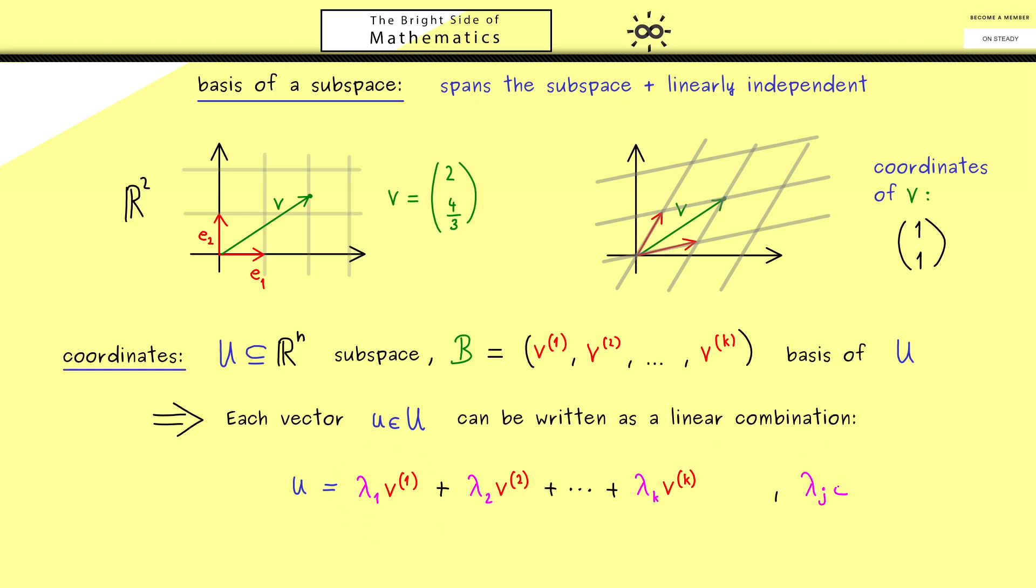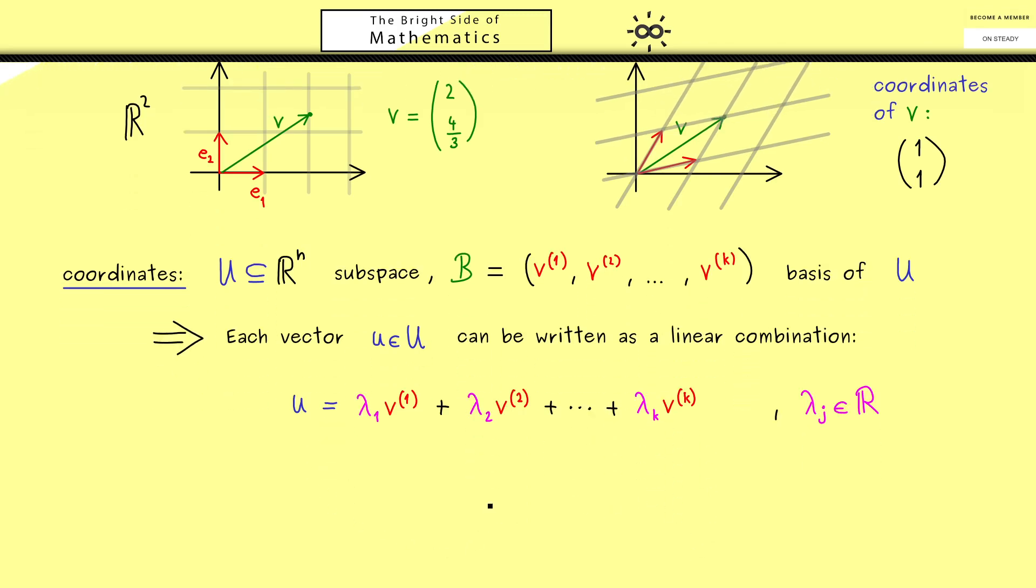And now you already know these coefficients we now call the coordinates of the vector u with respect to the basis B. And indeed an important thing to note here is that these coefficients are uniquely determined because our family for the basis is linearly independent. So there is only one way to write a linear combination for vector u. And with this we know the coordinates of u are well defined.